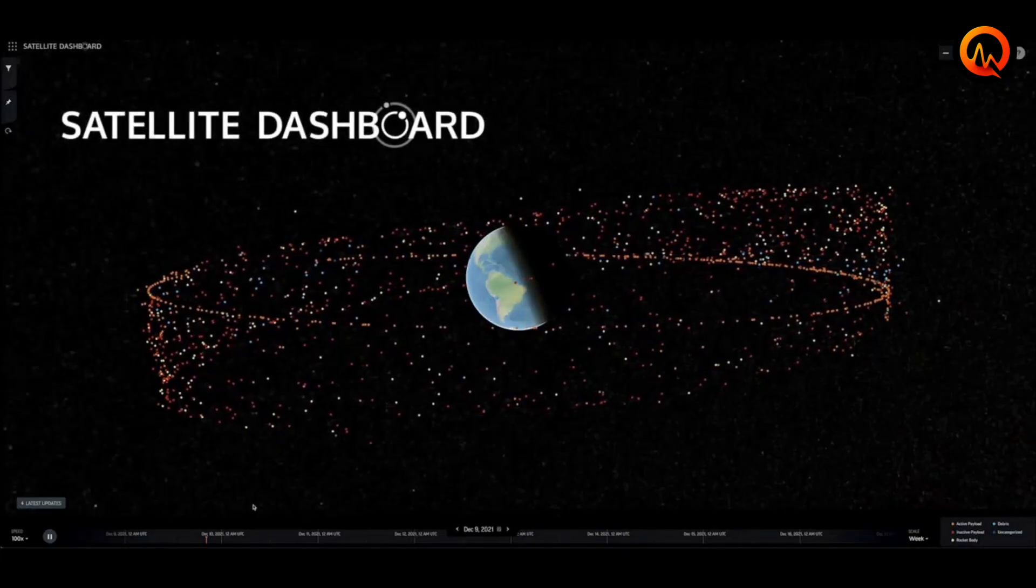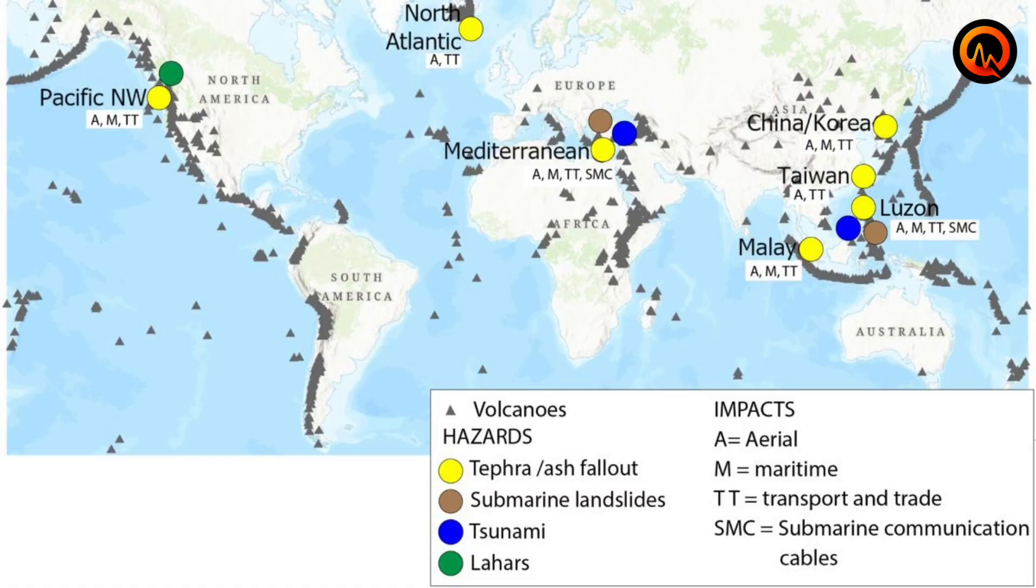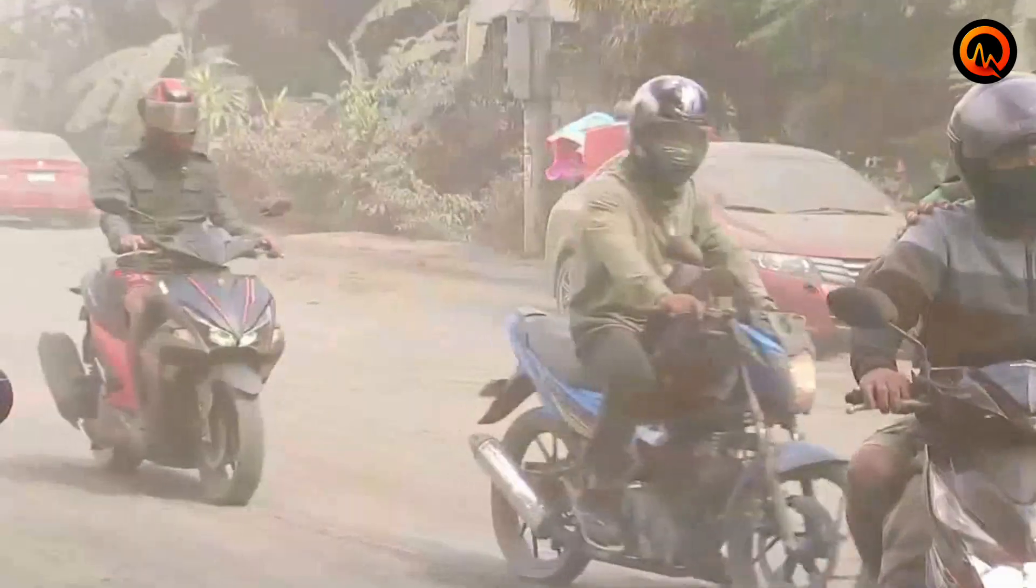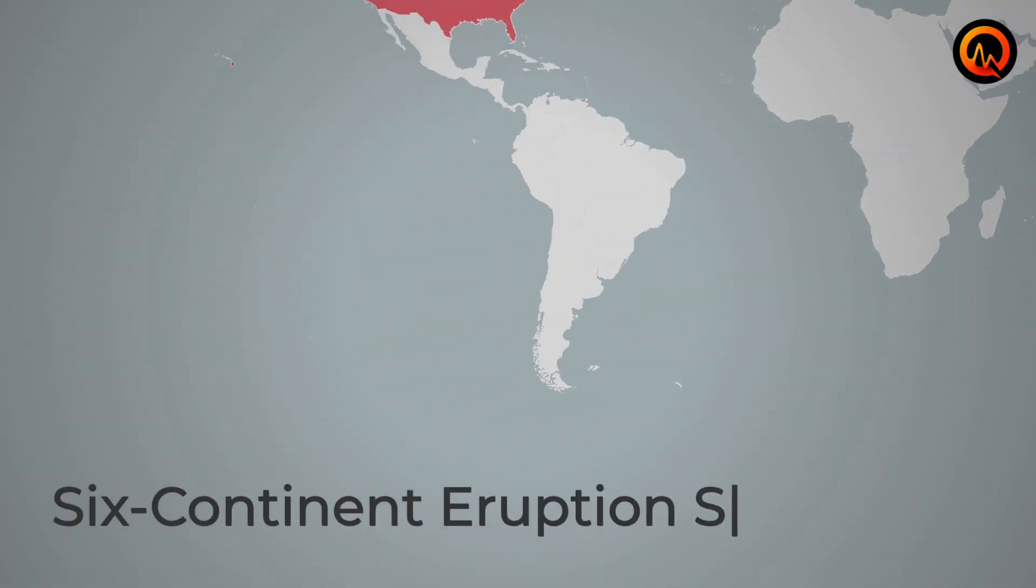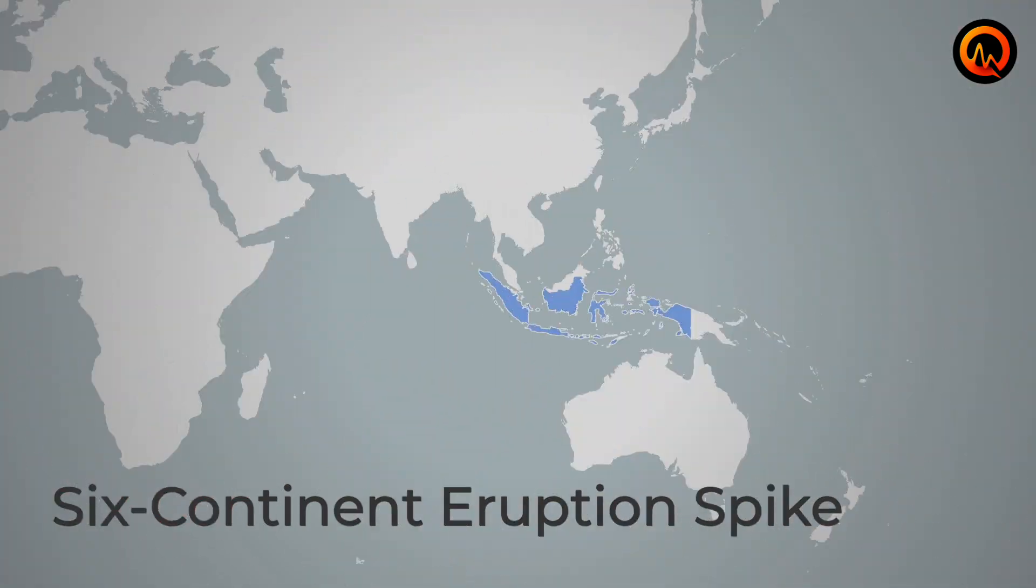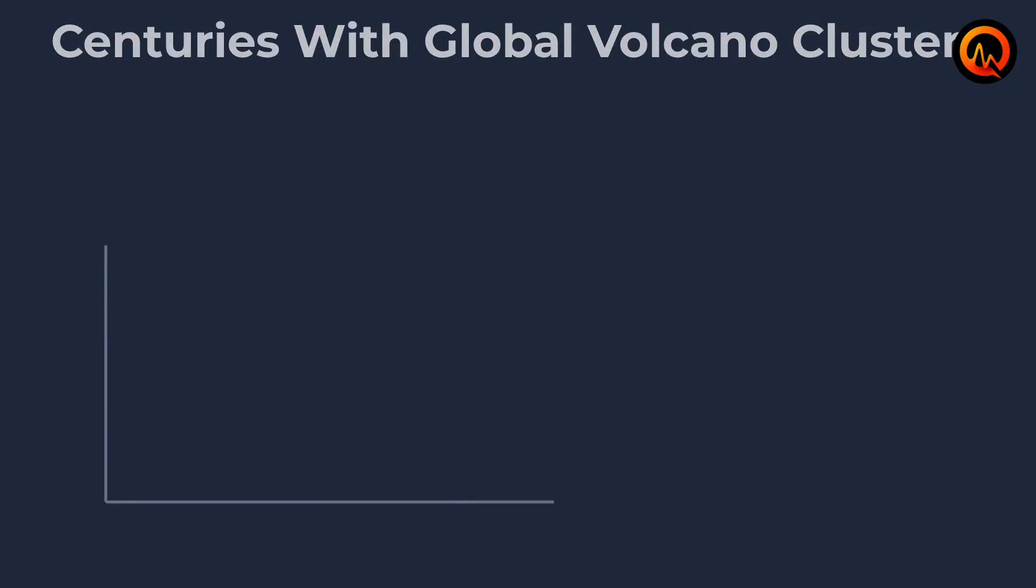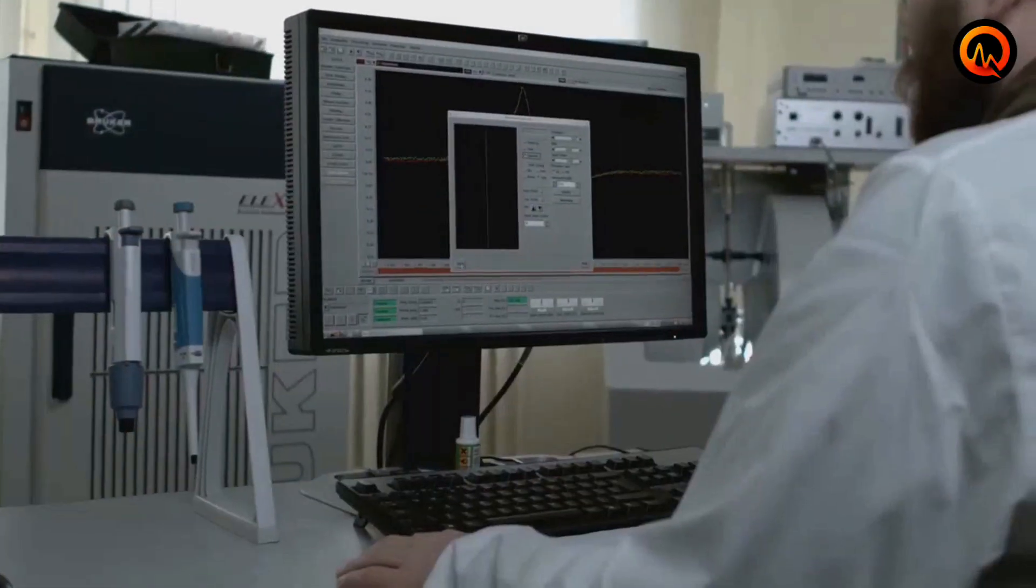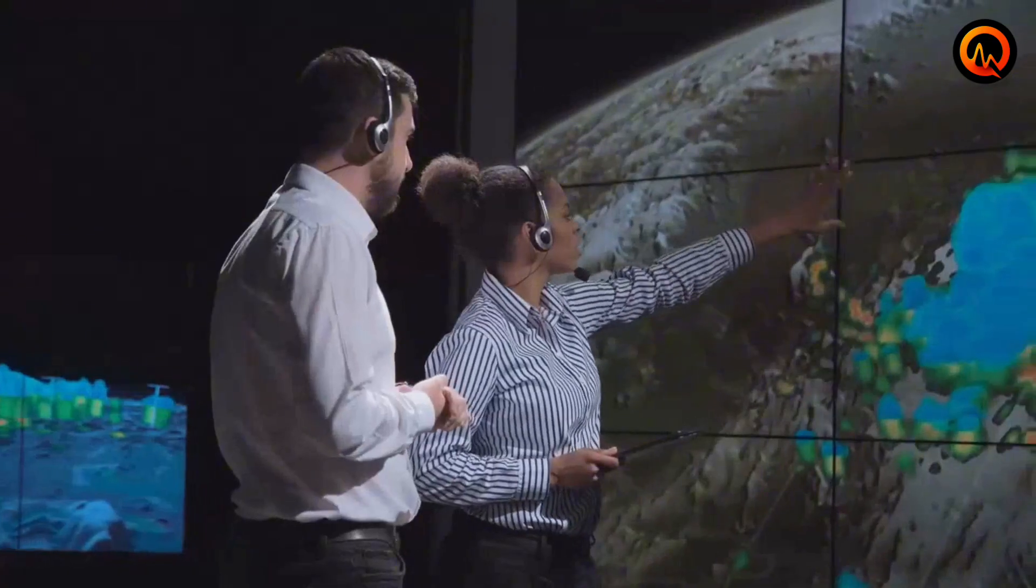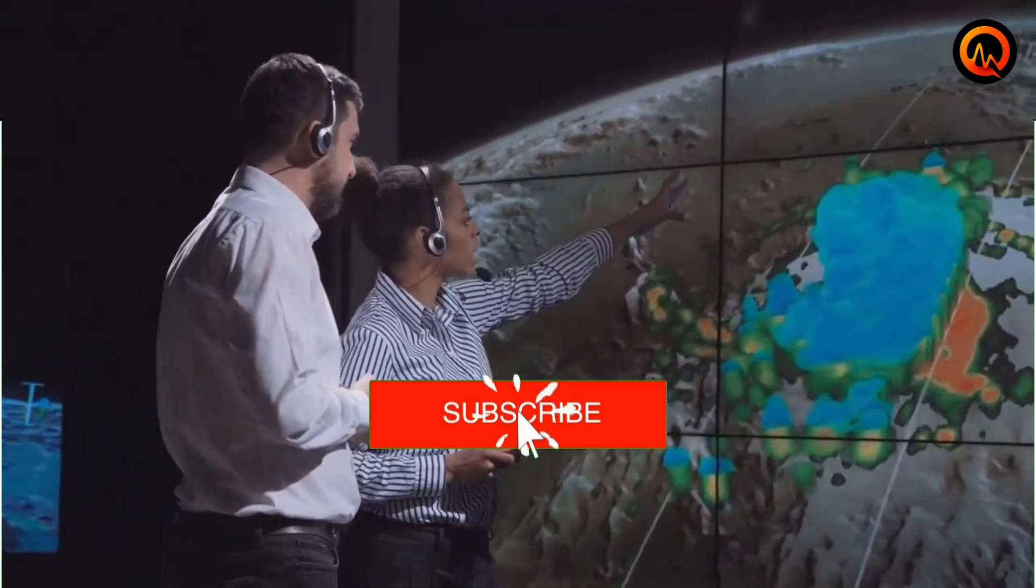The evidence is clear. This volcanic clustering warrants serious monitoring and preparation. The reality is that simultaneous eruptions across six continents within weeks are statistically extraordinary, occurring once every 50 to 100 years based on geological records. This level of global volcanic synchronization suggests we are witnessing a rare planetary-scale geological event in real time.